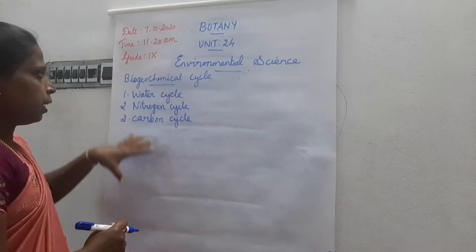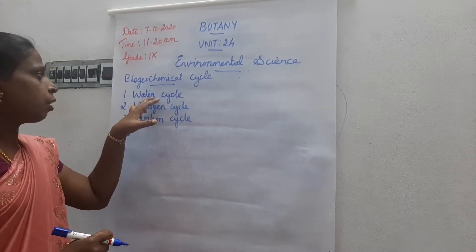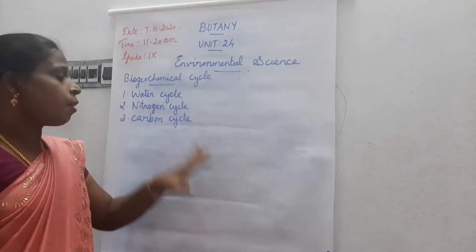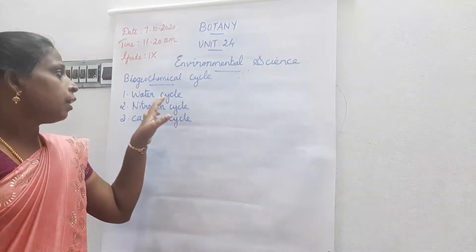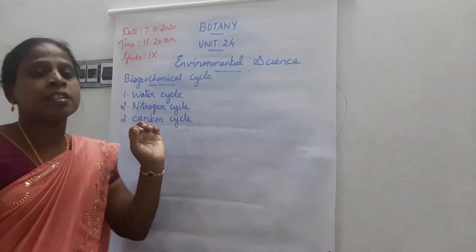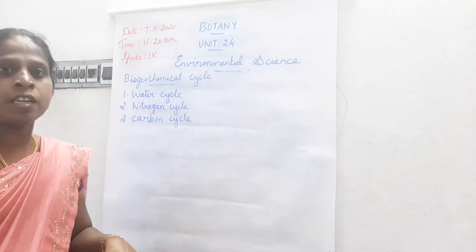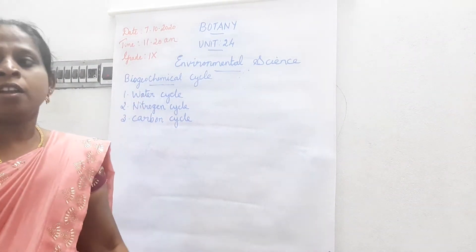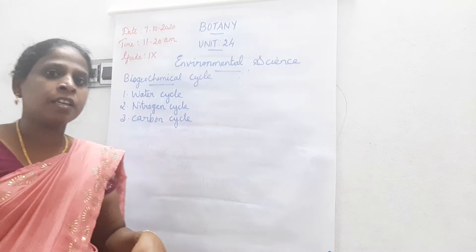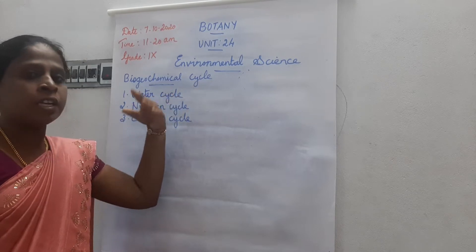Biogeochemical cycle can be classified into three types: water cycle, nitrogen cycle, and carbon cycle. Last class you learned about the water cycle, which is otherwise called the hydrological cycle. The processes involved in the water cycle are evaporation, transpiration, sublimation, condensation, precipitation, surface runoff, infiltration, and percolation.